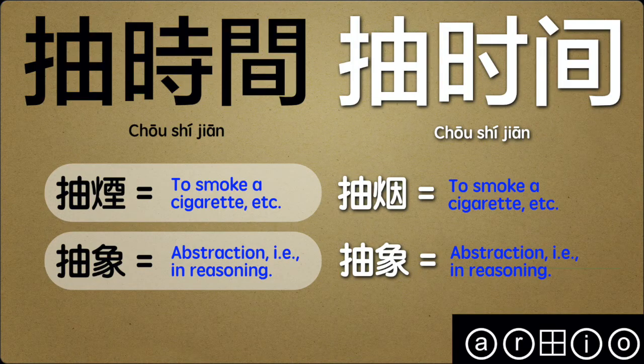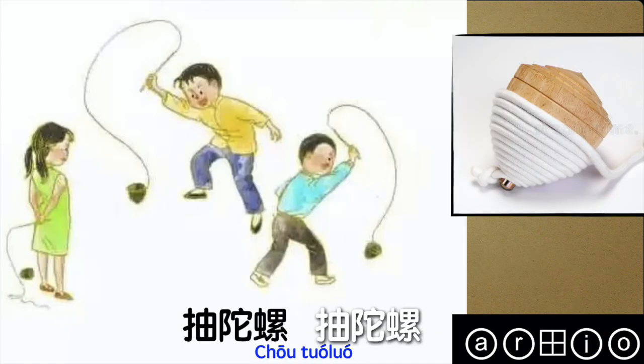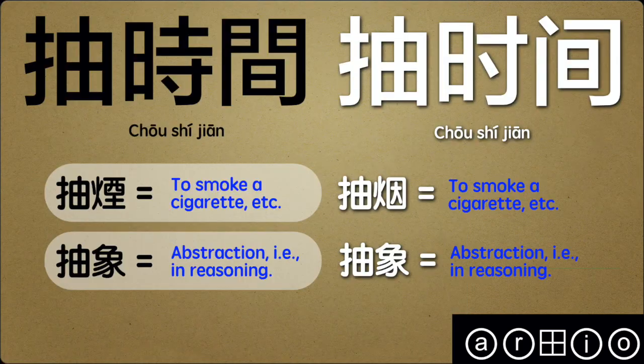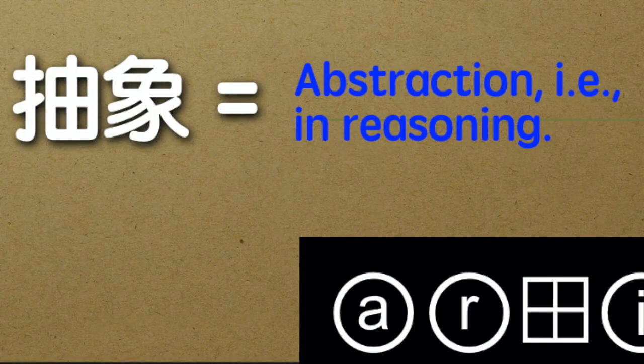So this word, 抽 (chōu), tone 1 — we reflected on it at quite some length in the first episode. If I were to describe a fundamental meaning or a root meaning, it would be this verbal sense of to pull something, to draw something out. And then in an abstract sense, we can imagine the etymological origin of other meanings as being linked to that fundamental meaning. So the idea of pulling the smoke from a cigarette, drawing it out.